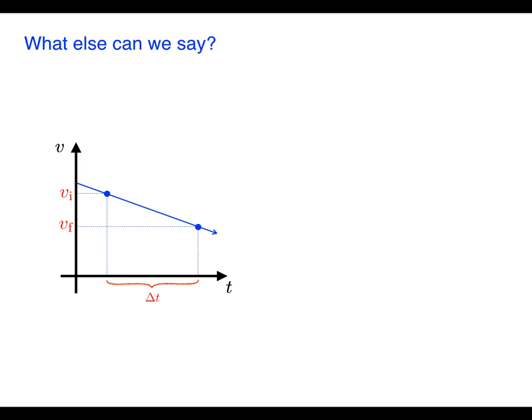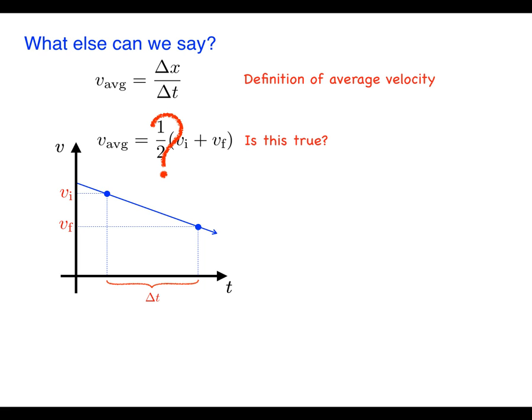So now it's time to derive some other constant acceleration equations. To do this we'll start with the definition of average velocity which is defined as the change in position over change in time, or v_avg = Δx/Δt. This definition is true for any kind of motion not just motion with constant acceleration. Students often think that finding the mean of the beginning and ending velocity is also a reasonable way to find average velocity. What do you think about this method? Do you think it's true?